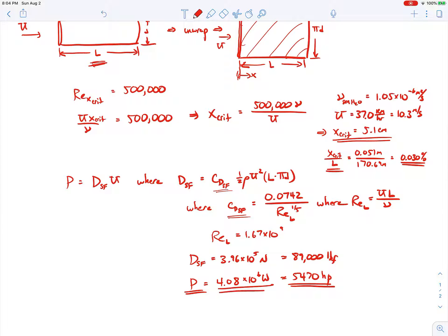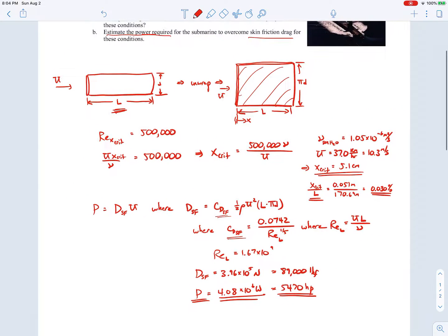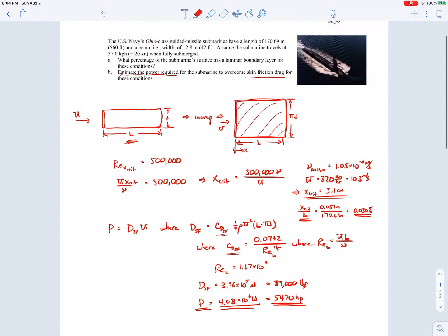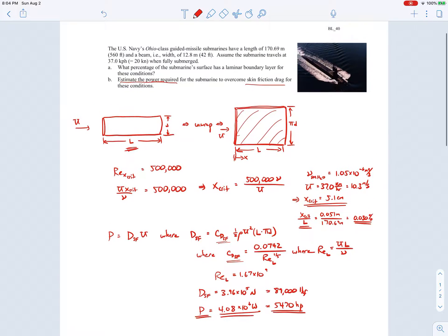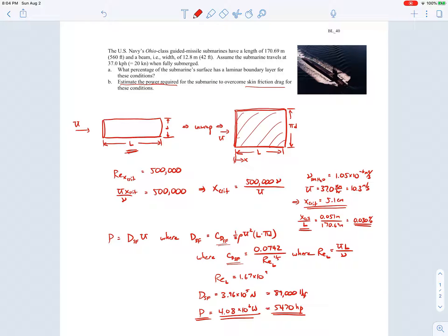And of course, many of these submarines are actually nuclear powered, so there is a lot of energy that's being generated by the power plant. But it's very impressive how much power is required to overcome the skin friction drag. Now the numbers that I used in this example actually came from the internet. As far as I know they're correct, but you can imagine under emergency conditions that the submarine could travel even faster than what we have here, so there would be a lot more power potentially required to operate the submarine. All right, we'll go ahead and end the example there.